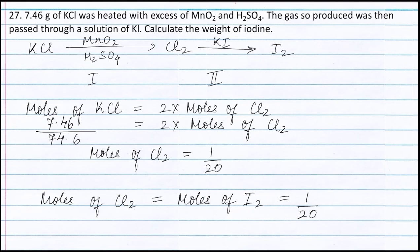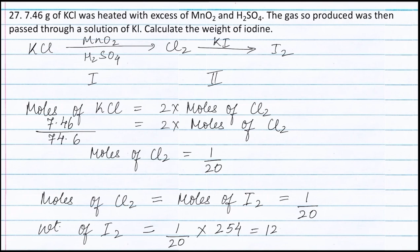Since we know the moles of iodine, we can find out the weight of iodine. Therefore, weight of iodine is equal to moles of iodine, that is 1/20, multiplied by molecular weight of iodine, that is 254 g, and this is equal to 12.7 g. Therefore, weight of iodine formed is 12.7 g.